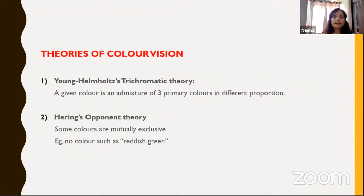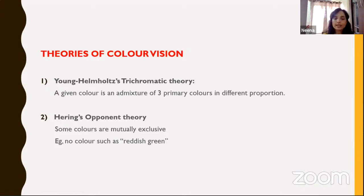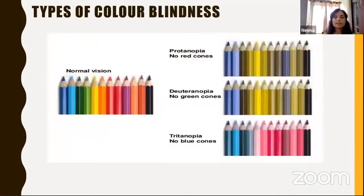There are various theories of color vision important for understanding color vision abnormalities. The famous Young-Helmholtz trichromatic theory states that a given color is an admixture of three primary colors in different proportions. Hering's opponent theory states that some colors are mutually exclusive — for example, there is no color like reddish green.